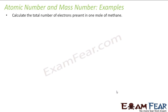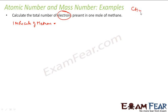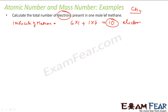Here we need to find the number of electrons in one mole of methane. One molecule of methane — methane is CH₄ — so carbon has 6 electrons, one carbon, plus hydrogen: 4 hydrogens each with 1 electron. Therefore one molecule of methane has 10 electrons.